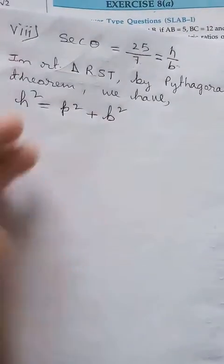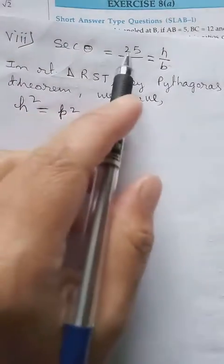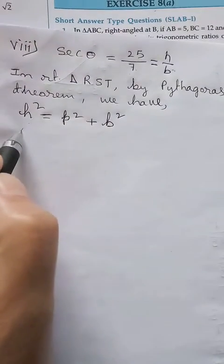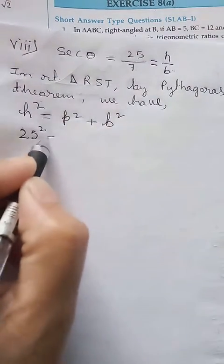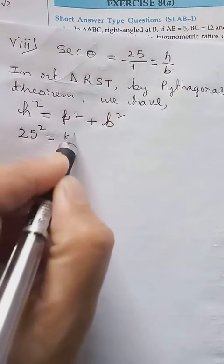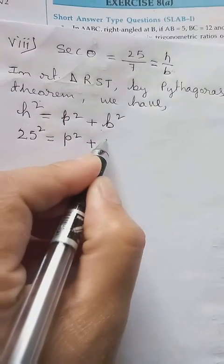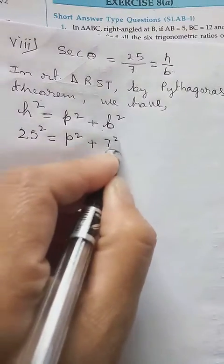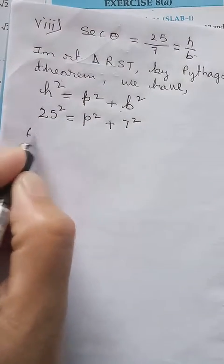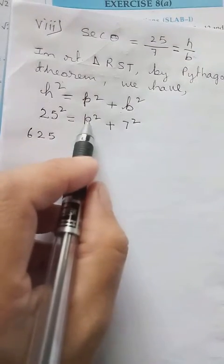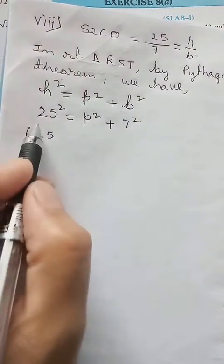So now we need to find the perpendicular. So H² equals P² plus B². H here is equal to 25, then we put whole square. Then P we don't know, let it be there, P². B we know is equal to 7. So now you do 25 into 25, it will be 625.